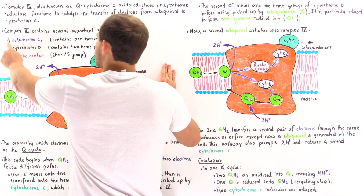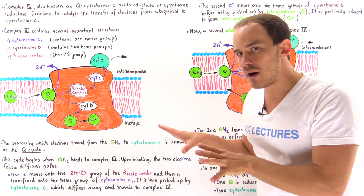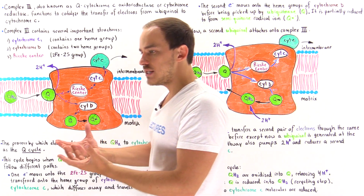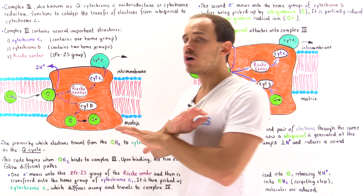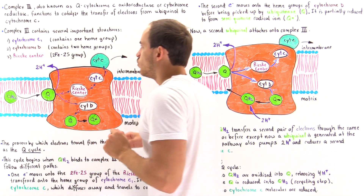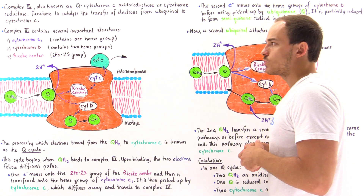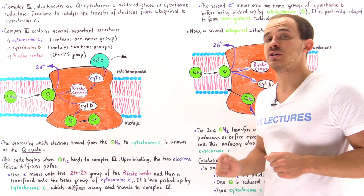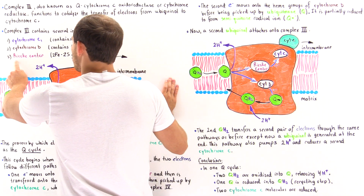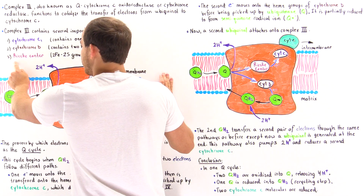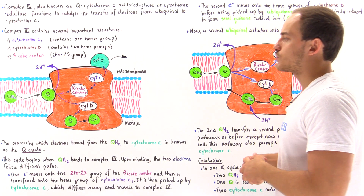The first component is cytochrome C1, which is not the same thing as cytochrome C. Both are cytochrome molecules — proteins that contain heme groups that can bind and transfer electrons — but cytochrome C and cytochrome C1 are different types of molecules. Cytochrome C1 contains a single heme group. Complex three also has cytochrome B, which contains two different heme groups capable of attaching electrons. Finally, there is the Rieske center, which contains the 2Fe-2S (iron-sulfur) group that can also bind and transfer electrons.